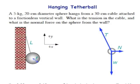Here's a statics problem that doesn't have too many forces, but the interesting part that complicates this is knowing the geometry to figure out what you're looking for. We've got a 5-kilogram, 20-centimeter sphere hanging from a 30-centimeter cable attached to a frictionless vertical wall. We want to find what is the tension in the cable and what is the normal force on the sphere from the wall.